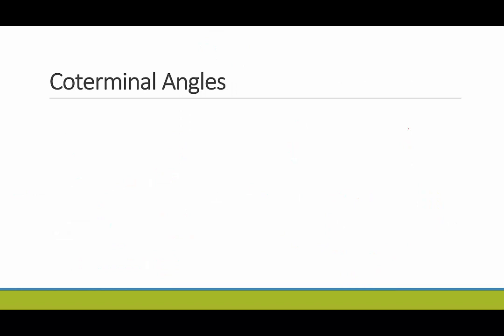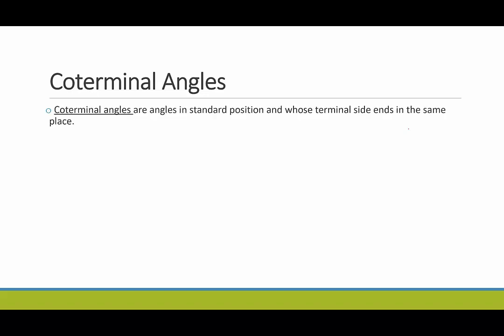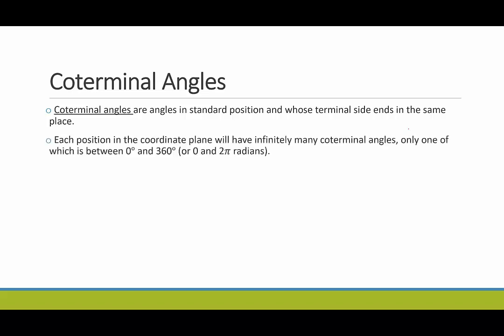That was a look at drawing angles in standard position. The next thing we want to talk about is coterminal angles. From the name, 'co' usually means shared, and so these are angles that share a terminal side. Coterminal angles are angles in standard position whose terminal side ends in the same place. Each position in the coordinate plane will have infinitely many coterminal angles, only one of which will be between zero degrees and 360 degrees, or zero and two pi radians.